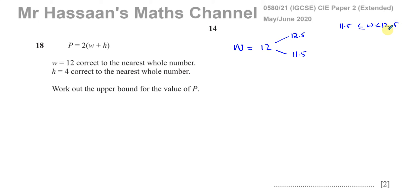Now the word upper bound means basically this: less than 12.5. So the limits of W would be from 11.5, including 11.5, up to just before 12.5. But when we say the word upper bound, that's what we mean. So when we write down the upper bound of this, we write down 12.5.